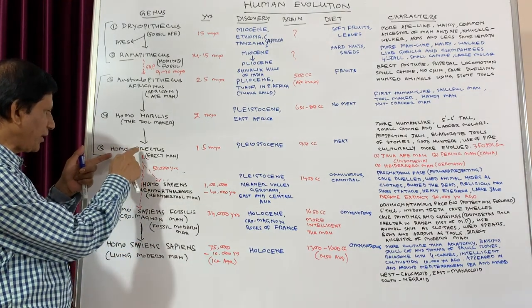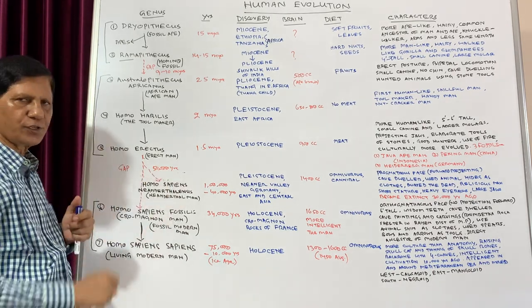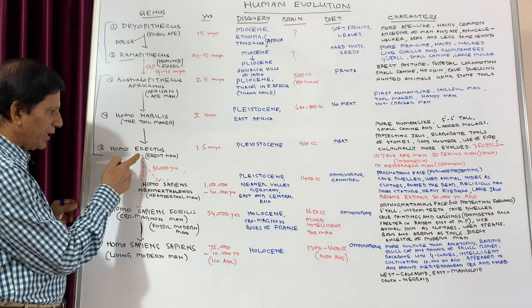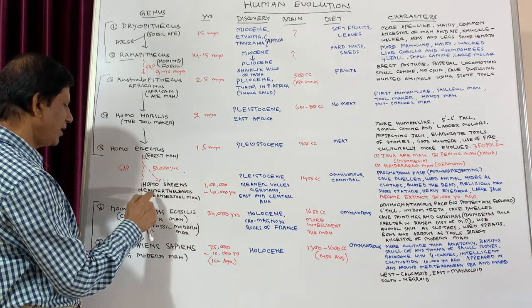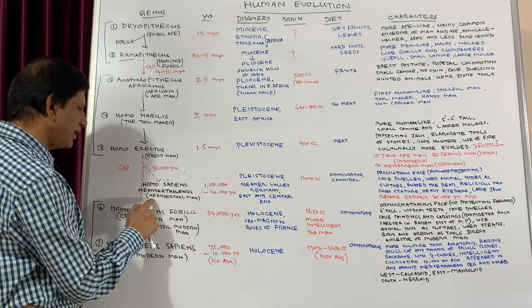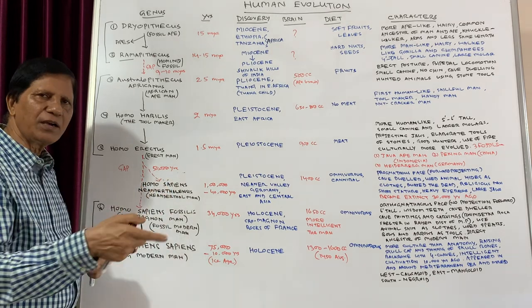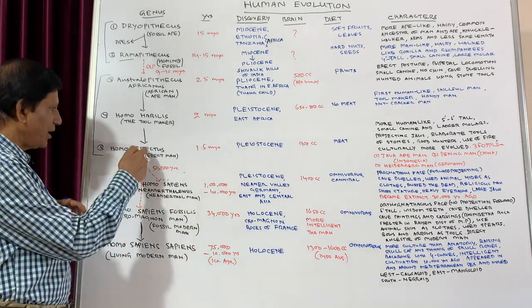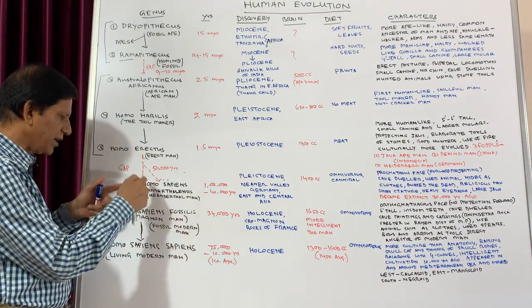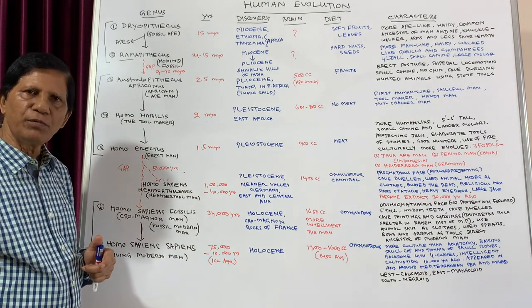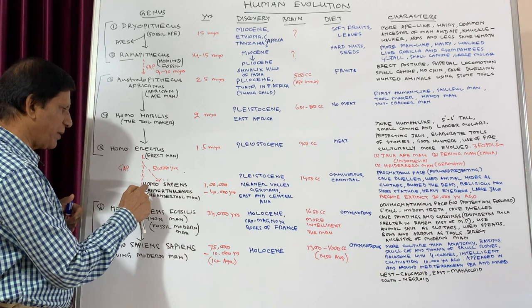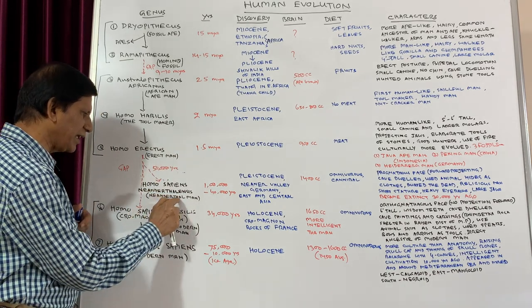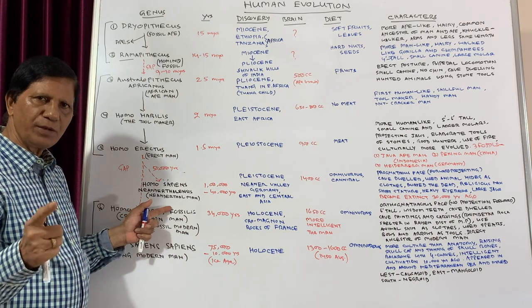After Homo erectus there is a gap of around 50,000 years. During this gap, evolution took place in two ways. One branch gave rise to Homo sapiens neanderthalensis — Neanderthal man — which is again important from an exam point of view. The other branch gave rise to Homo sapiens fossilis. The Neanderthal branch eventually became completely extinct and did not contribute to the evolution of modern humans.